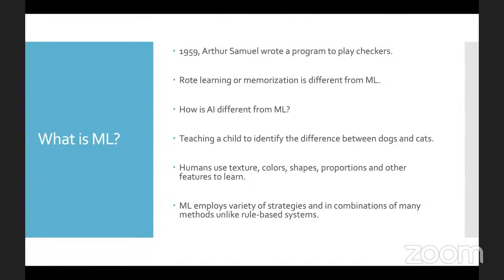Machine learning translates facts into logic — converting them into mathematical equations. In the end, it is all mathematical equations. A mathematical equation or expression is able to define the relationship between data: given certain scenarios, what will be the probable outcome? You feed historical data, the model learns from it, builds a complex mathematical equation, and that equation is able to predict what the output will be for future inputs.